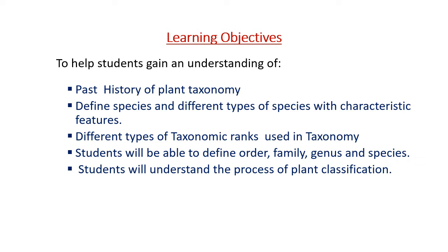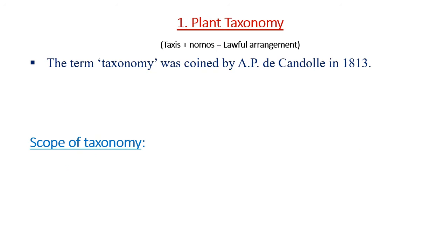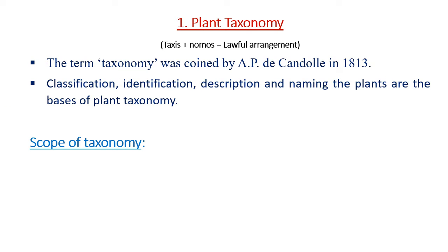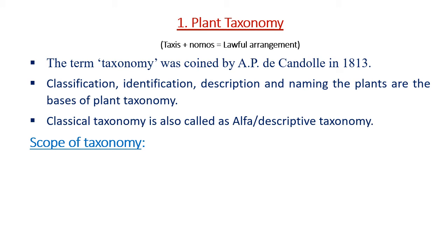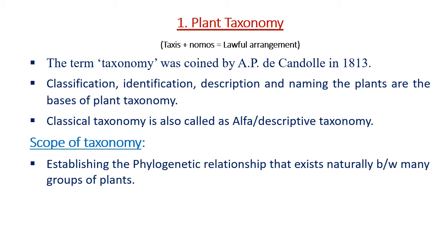You will understand the process of plant taxonomy. The term taxonomy was coined by A.P. de Candolle in 1813. Classification, identification, description, and naming of plants are the basis of plant taxonomy. Classical taxonomy is also called alpha taxonomy or descriptive taxonomy. The scope of taxonomy includes establishing the phylogenetic relationship that exists naturally between many groups of plants.